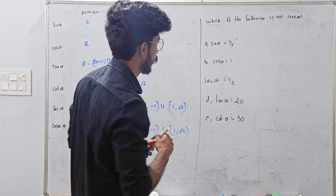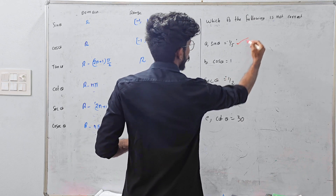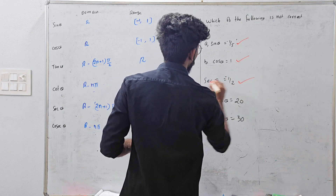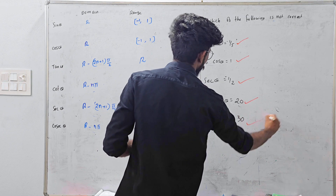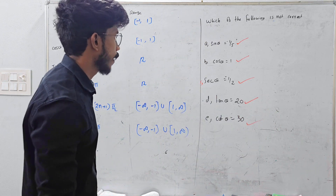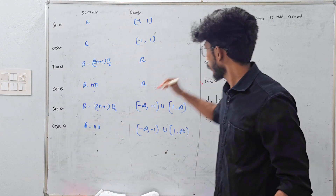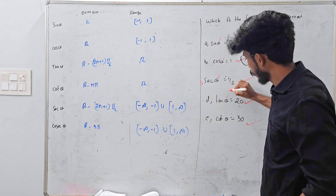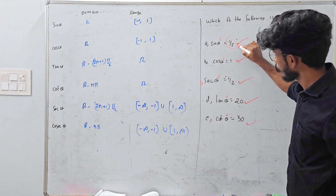That's not correct. The options are: sin theta equals minus 1 by 5, cos theta equals 1, sec theta equals minus 1 by 2, tan theta equals 20, cos theta equals 30. Now, if we add the values of the domain, we have a range of different values.